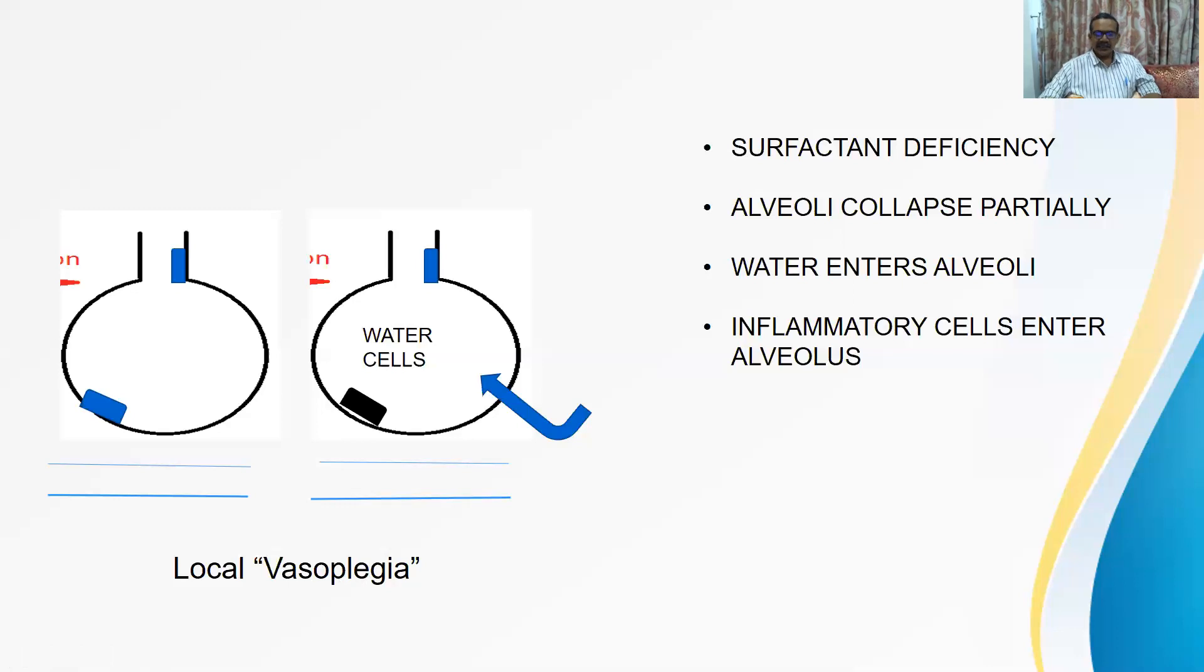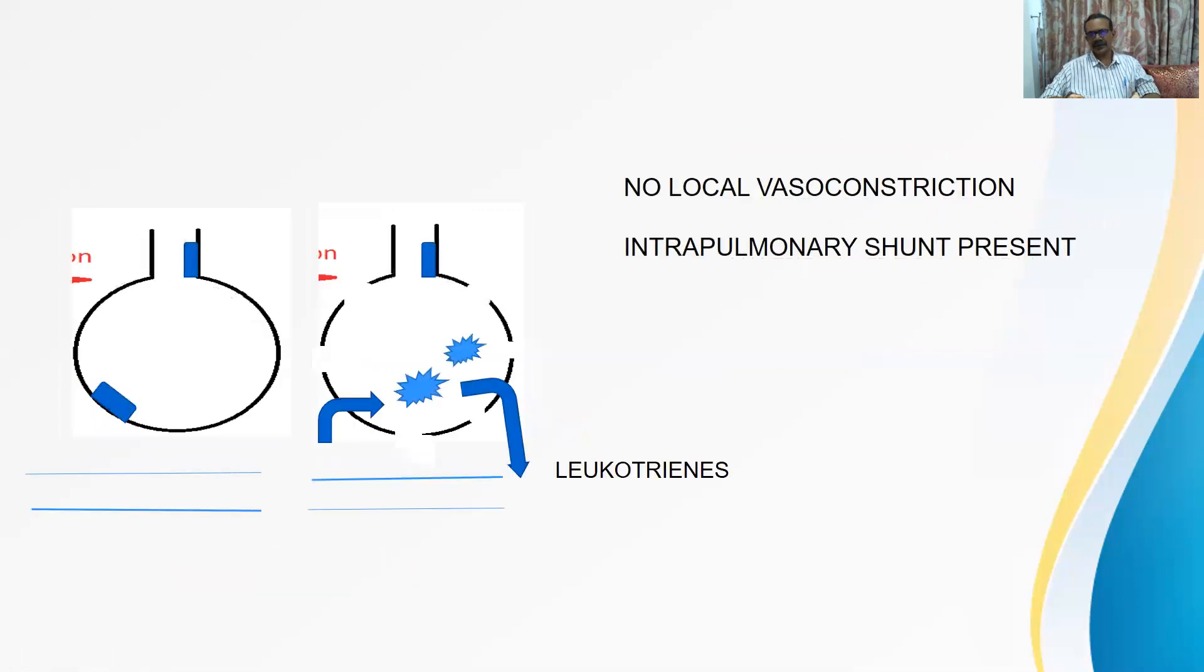Now this local vasoplegia is something we have to explain why it happens only in P, not in C. Why it happens. No local vasoplegia, no local vasoconstriction. Because in this situation, these outside cells and water is coming inside. Here these inflammatory cells produce something which is called leukotrienes. This leukotrienes, they inhibit constriction and they allow vasodilation. Actually, because of hypoxia, local hypoxia, this vessel should have been constricted. It does not happen because the leukotrienes are trying to keep it open. Now this is bad news.